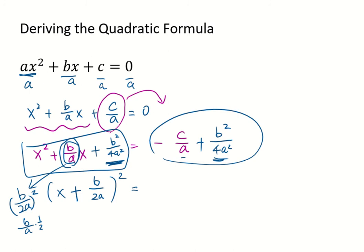So I need to turn this a into 4a squared. I need to multiply by 4a.